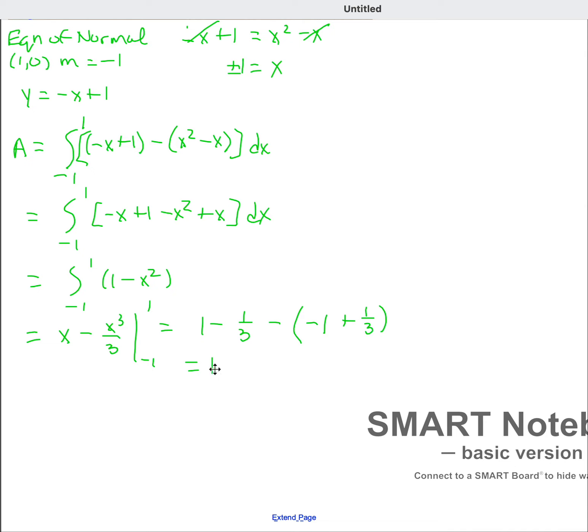Clean this up. 1 minus 1 third minus, or plus 1 I should say, minus 1 third. Distributing the negative. 2 minus 2 thirds. That's equal to 1 and 1 third, or 4 thirds.